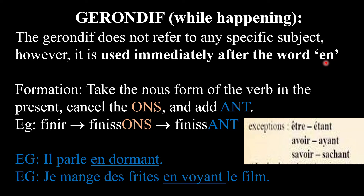How do you form the present participle — the gérondif? You take the nous form of the verb in the present tense, just like you did for the imparfait. You take the nous form in the present, you cancel the -ons, and instead of adding the imparfait endings, you just add -ant, and that gives you the present participle.